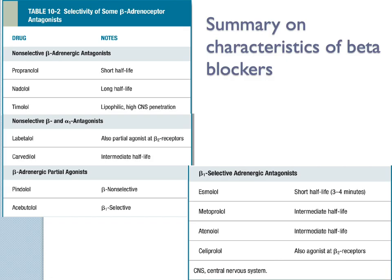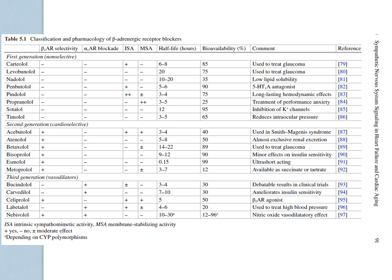Some beta blockers are non-specific — propranolol, nadolol, timolol. There are also some with alpha-1 antagonist activity like carvedilol. Some are partial agonists, some are beta-1 selective, and some have a very short half-life like esmolol — available in IV form where effects can kick in really quickly. This chart shows the effects of different beta blockers — go through on your own.